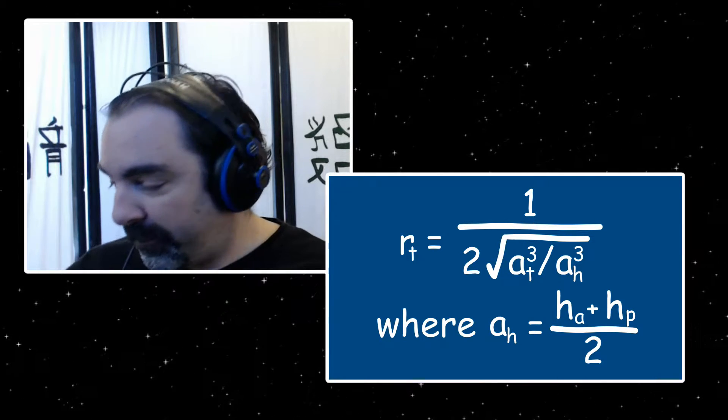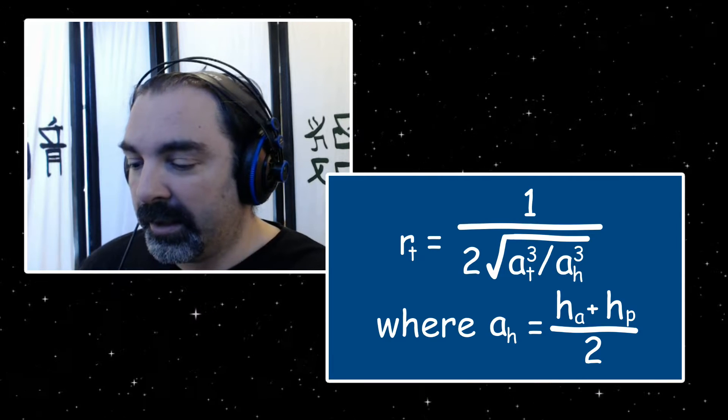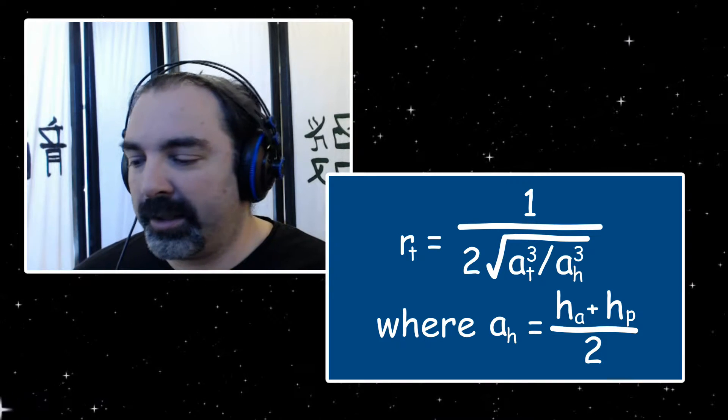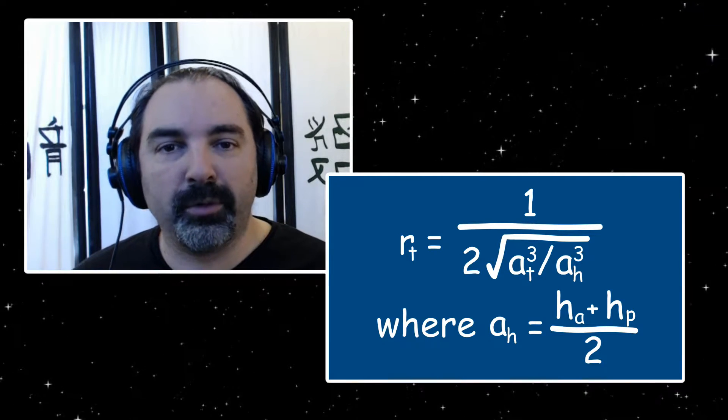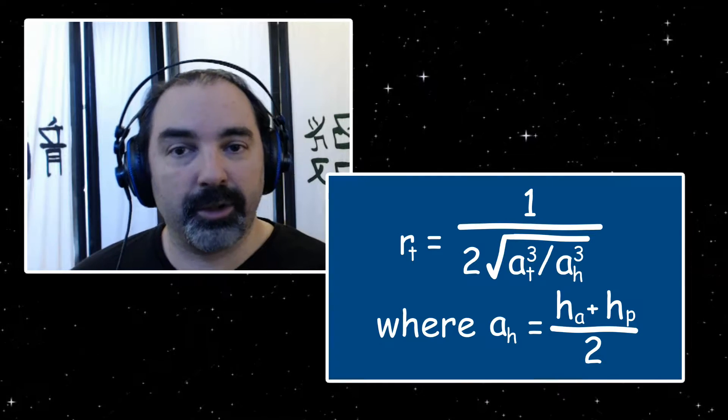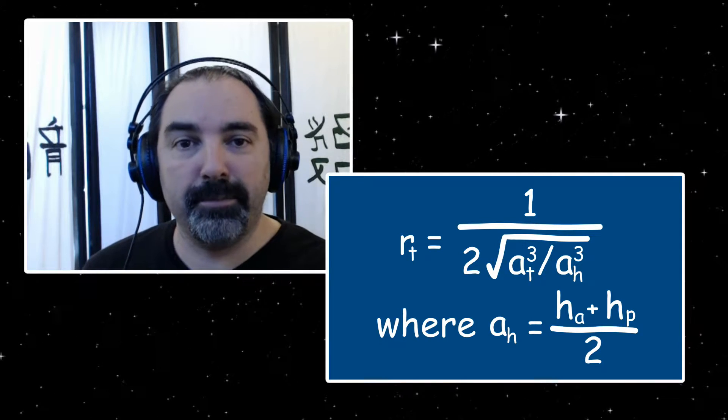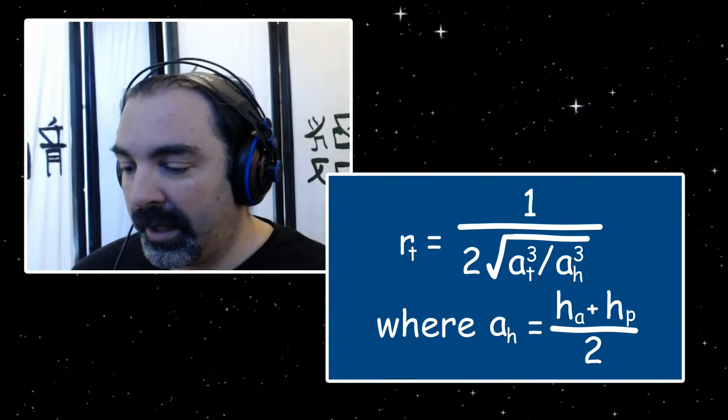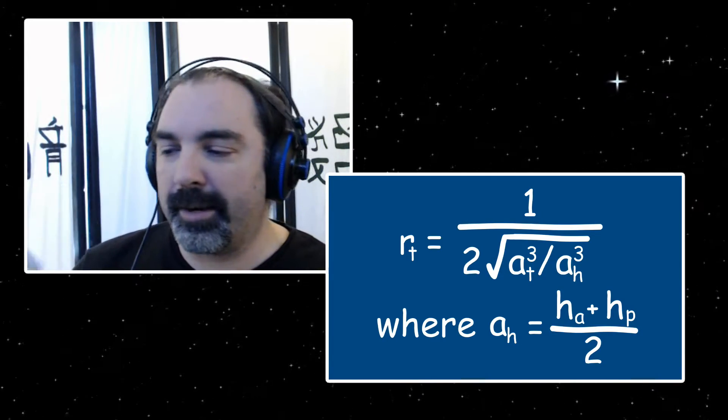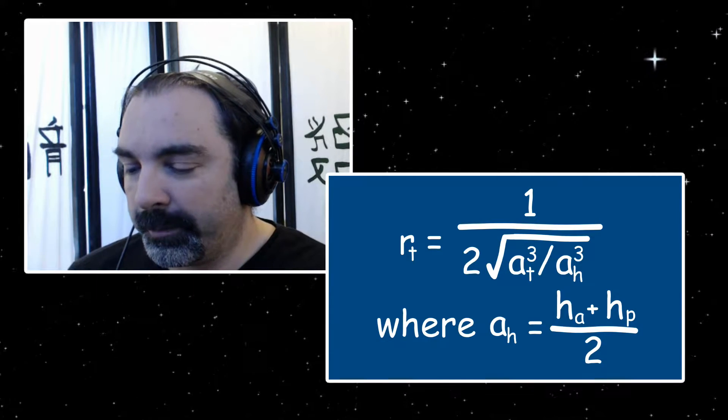So in this case we have in this equation where a_h equals h_a plus h_p over two. All we need to do is plug in some numbers here for those things. We have the h_a is the apoapsis, that's the furthest part away from the orbit. In this case, in our example we'll be heading to Duna. So since Duna is further away from the sun than Kerbin, we'll plug in Duna's semi-major axis which is about 20.7 million kilometers as h_a.